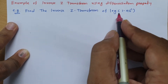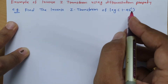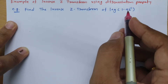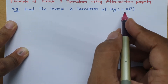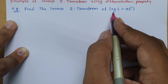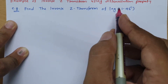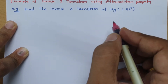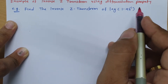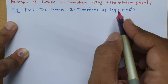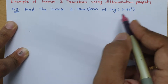Whenever you are given a signal in terms of log, you cannot solve the inverse z-transform directly, as there is no basic signal formula available for this. So we need to apply the differentiation property. In the previous example I have also explained how to apply the differentiation property, and here we will use it again to solve this problem.